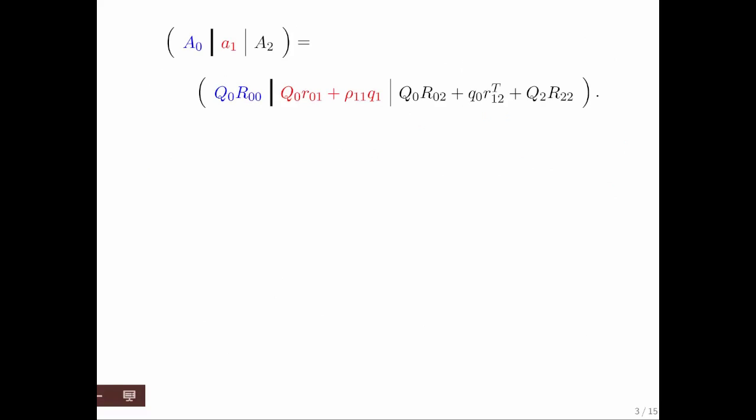So here we restate it. What we notice is that A0 must be equal to Q0 R00. A1 must be equal to Q0 R01 plus rho11 Q1. And A2 must be equal to this mess right here. Now, we're going to assume that we've already processed all of these columns, where we took the first however many columns and we computed its QR factorization. So far, we have done the Gram-Schmidt process with all of the columns up to this thick line.